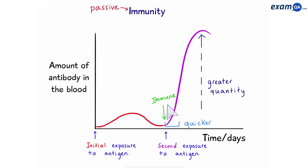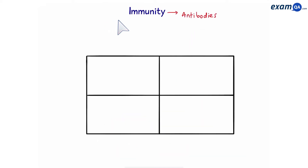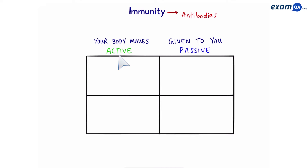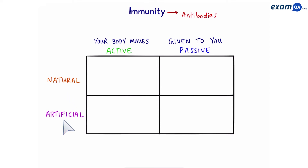With immunity, the words passive and active come up a lot. Remember, immunity is all about antibodies. In active immunity, your body makes the antibodies, whereas in passive immunity, antibodies are given to you. At the same time, we could have natural and artificial immunity. Natural refers to events that are part of the development of an organism, whereas artificial means external sources that are not necessarily part of the organism's life cycle.